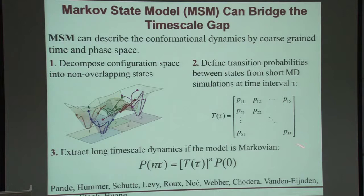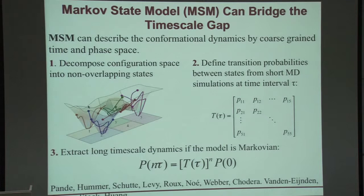If this model is Markovian, then we can propagate to extract longer time scale dynamics from this transition probability matrix. The advantage of doing this is that we can run many short segments of trajectories and piece them together to get a global picture of the configuration space, or the subset of configuration space we're interested in. This model has become popular, and many groups have used it in recent years.